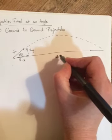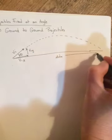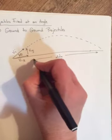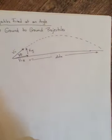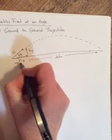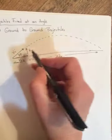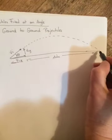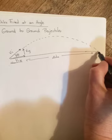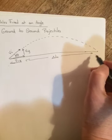This will still be the range. The delta DX will still be this way. This time it doesn't make any sense to ask you what's the delta DY because the delta DY is going to be zero. It ends up back where it starts.